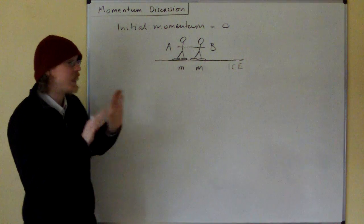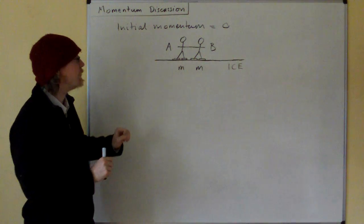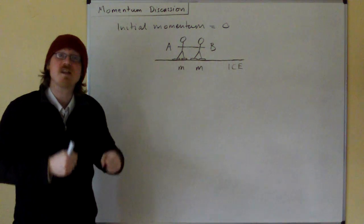Now, suppose twin A pushes twin B away from him. So twin B gets a velocity of v.